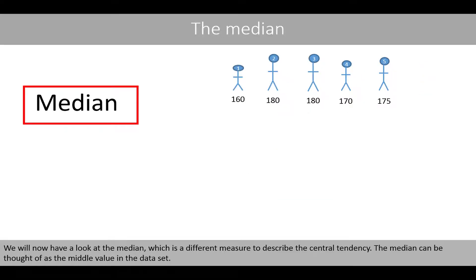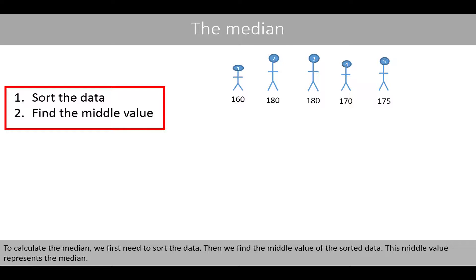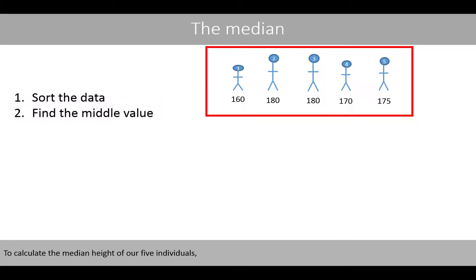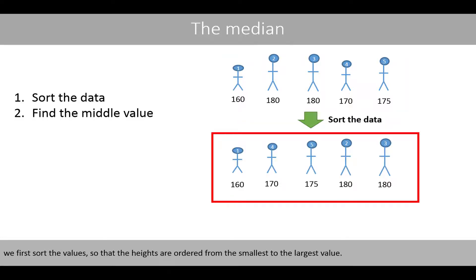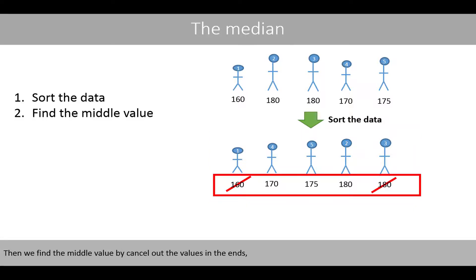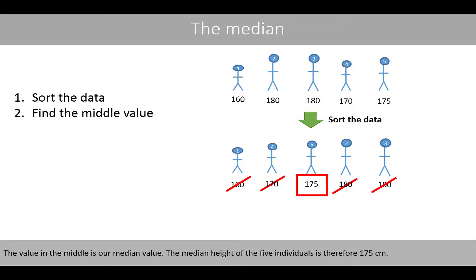We'll now have a look at the median, which is a different measure to describe the central tendency. The median can be thought of as the middle value in the dataset. To calculate the median, we first need to sort the data, then we find the middle value of the sorted data — this middle value represents the median. To calculate the median height of our five individuals, we first sort the values so that the heights are ordered from the smallest to the largest. Then we find the middle value by canceling out the values from both ends until we reach the middle value. The median height of the five individuals is therefore 175 centimeters.